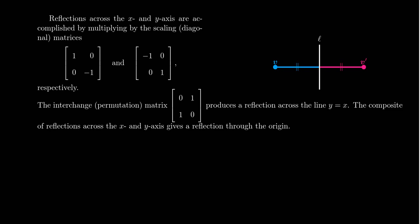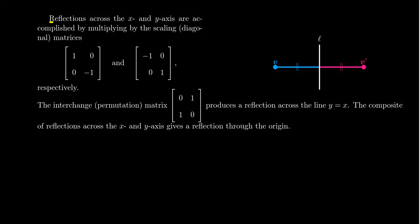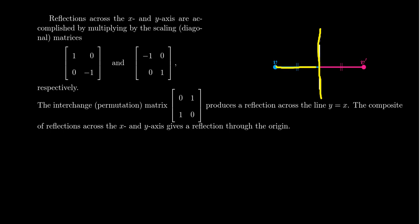The third type of geometric transformation on the plane is the idea of a reflection. We've talked about shears and scaling previously. A reflection is determined by an axis of reflection — some line going through the plane. It means that if you take the distance from a vector V to that line, you go that same distance in the other direction, at a right angle. The distance from the point to the line is the same on either side.